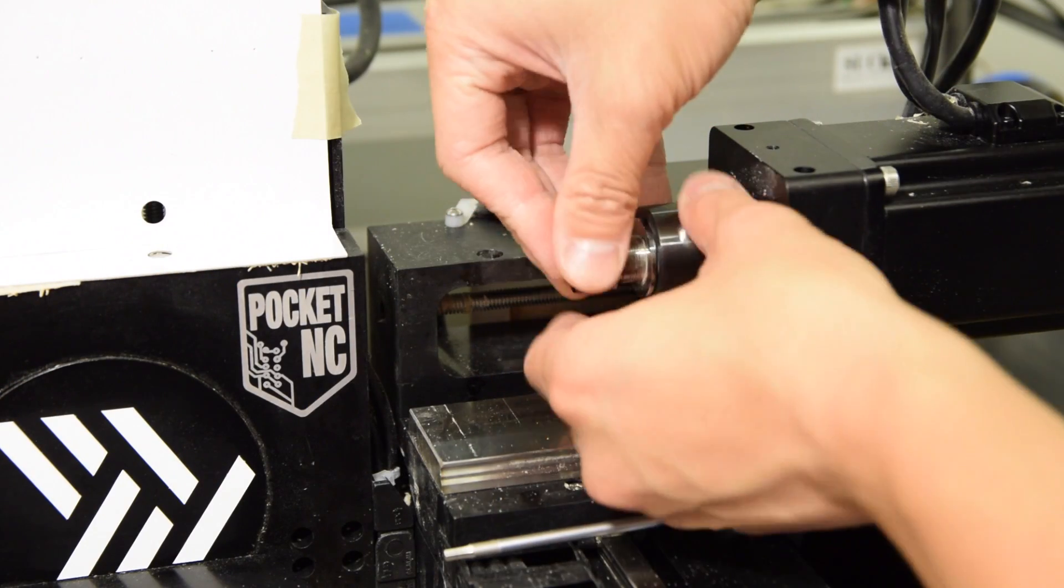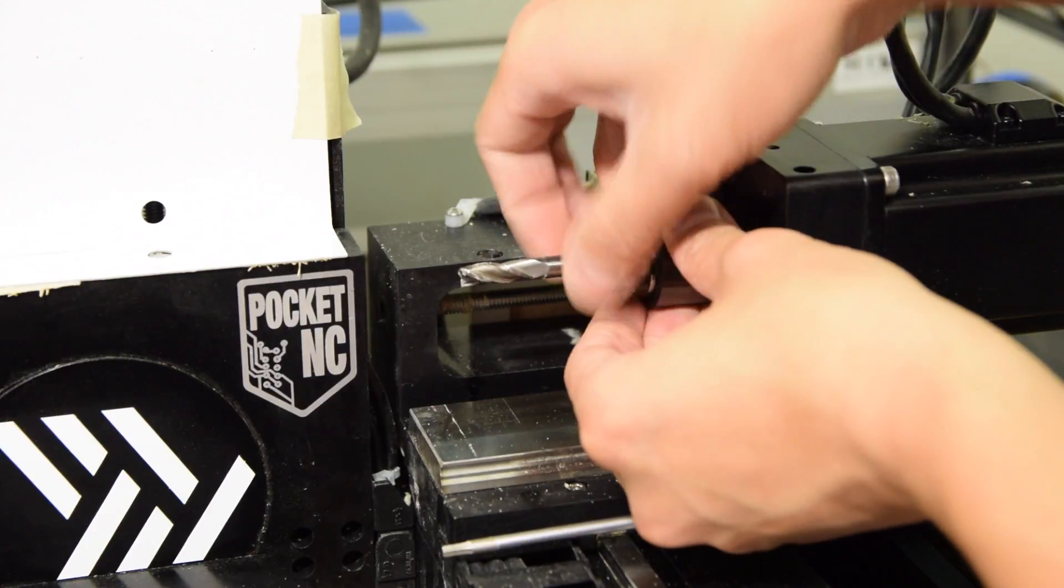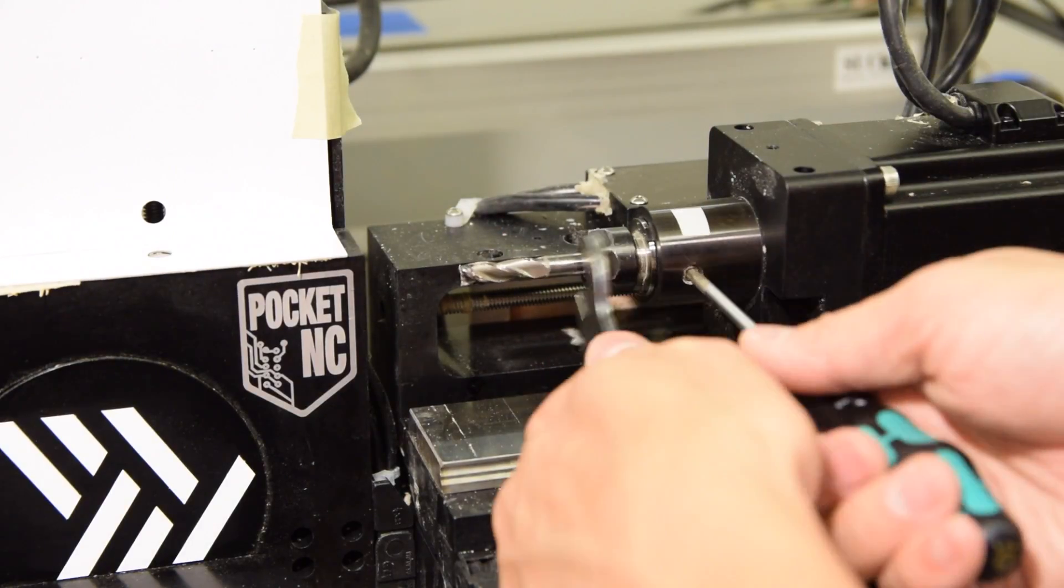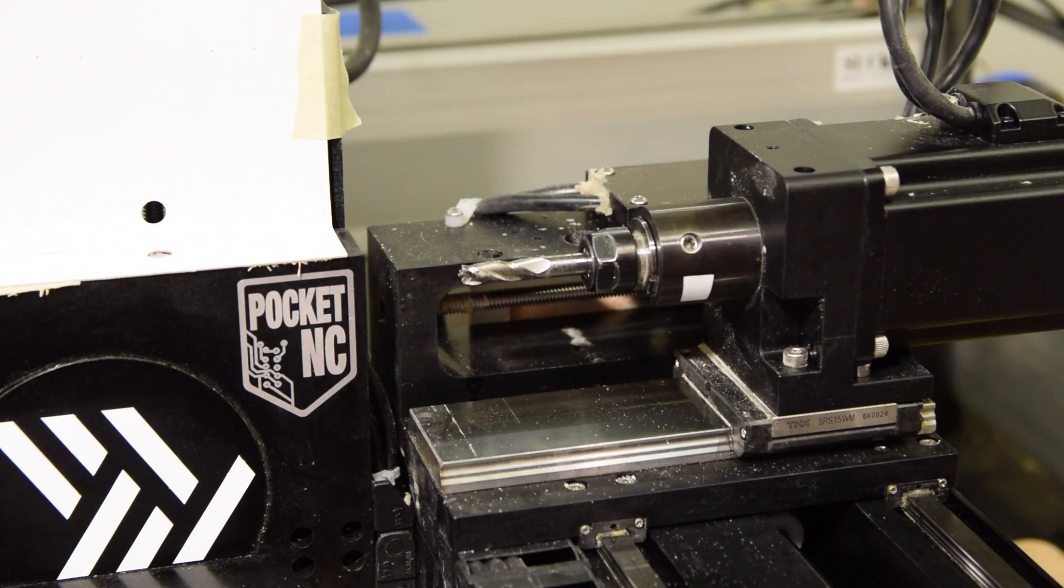the only way to load an end mill in a tool holder is to mount it on the spindle first. You have to use the hex head screwdriver to halt the spindle's rotation while you tighten the collet nut. I'm not a big fan of doing it this way.